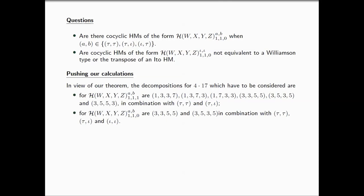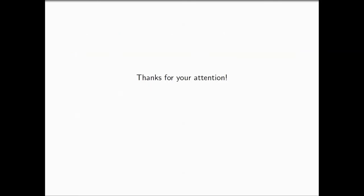The two questions I mentioned about not having any cocyclic Hadamard matrices in here of this type, but also the fact that these matrices are not equivalent to our Williamson or the transpose of an Ito type, those are open questions. Pushing our calculations, I was really hoping that Elias would be here to catch his attention. In view of our theorem for the decomposition of 4 times 17, we need to consider these row sums when we want to look into this type of cocyclic Hadamard matrix in combination with these actions. If we want to consider this other class, these would be the actual decompositions in combination with these actions. For P equals 19, all cocyclic Hadamard matrices would be equivalent to Williamson type or the transpose of an Ito type. That really concludes my talk, thank you.